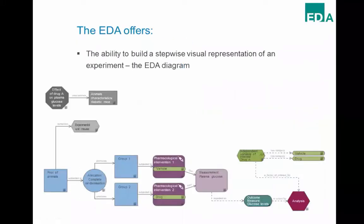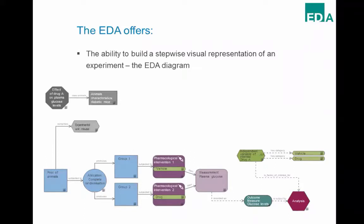The first thing the EDA does is give you the ability to build a stepwise visual representation of an experiment. An ontology was developed to allow any experiment to be represented as one of these diagrams, and the diagrams are machine readable. Think of the ontology as Lego bricks — you can combine them in any way to represent any experiment. For example, in a simple two-group comparison, a pool of animals is split in two: group one gets a vehicle injection, group two gets a drug injection, then plasma glucose levels are measured and the data is analysed.